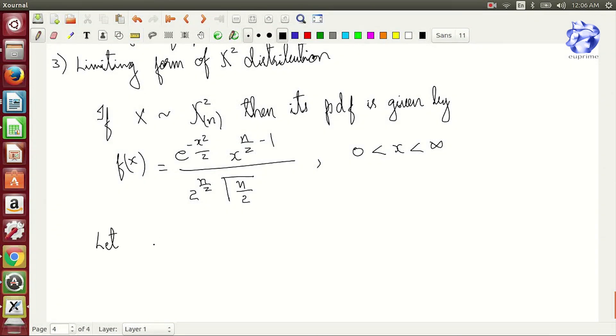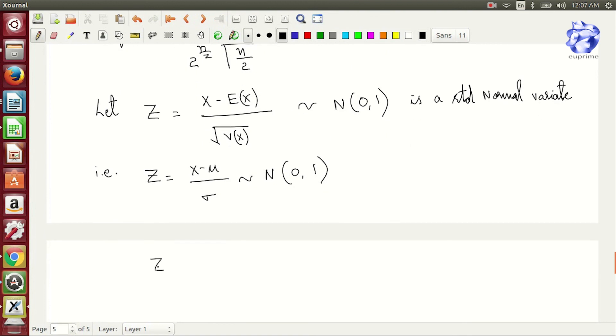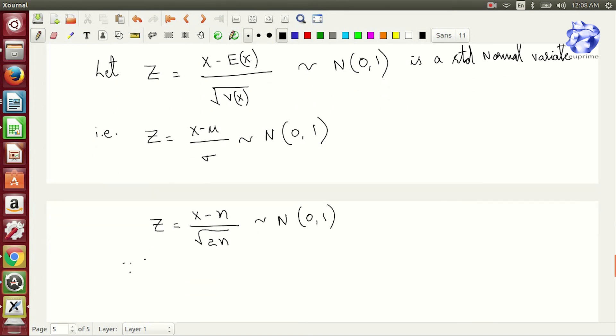Now let z is equal to x minus E of x divided by root of Vx, which is similar to N from 0,1, a standard normal variable. That is z is equal to x minus mu by sigma, where sigma is equal to root of 2n, and for chi-square distribution mean is equal to n and variance is equal to 2n.